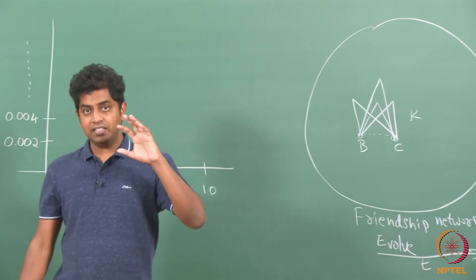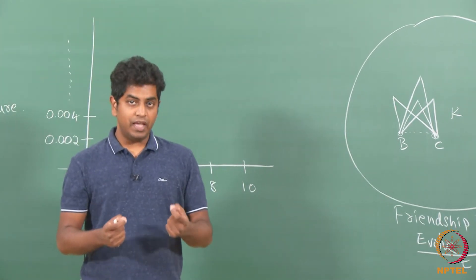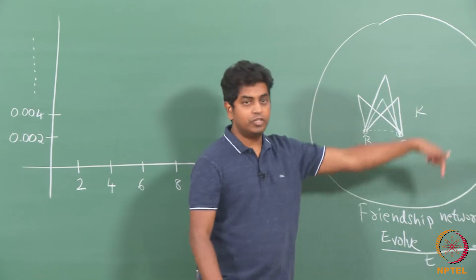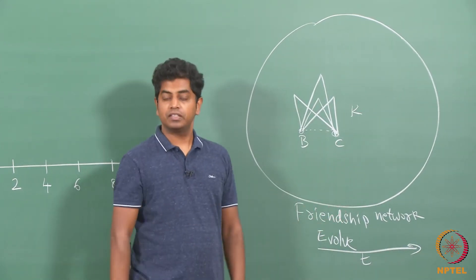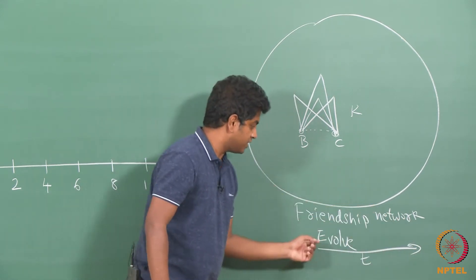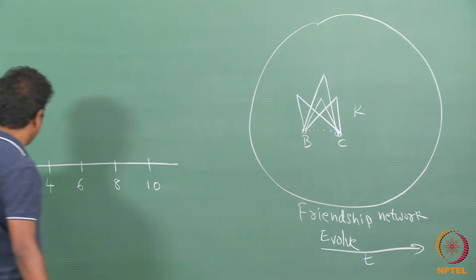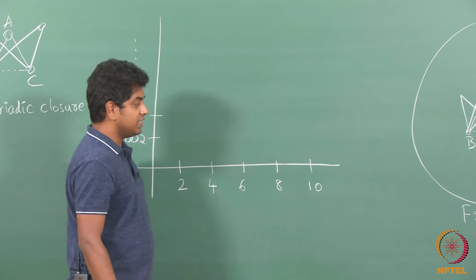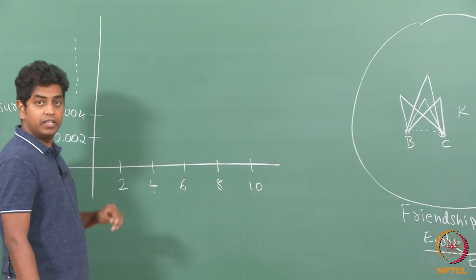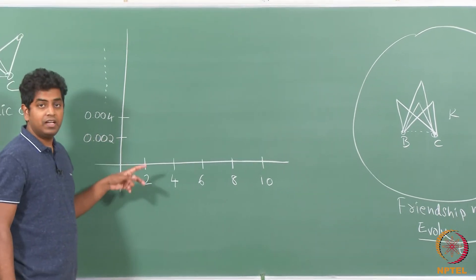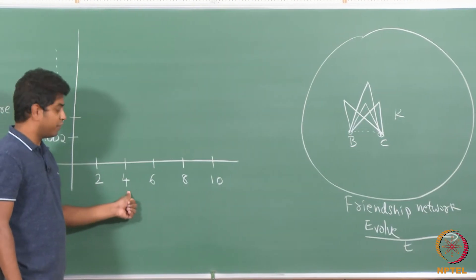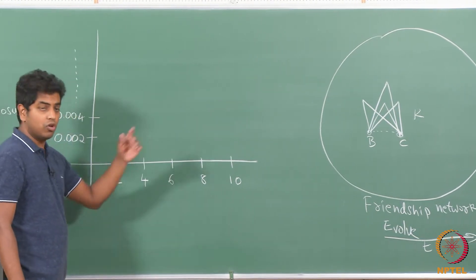Given two people B and C, if they have k number of common friends and they become friends tomorrow, we make a note of that. Across the evolving friendship network over this timeline, we draw a plot: what is the probability of having a closure between B and C when the number of common friends is 2, 4, 6, and so on?